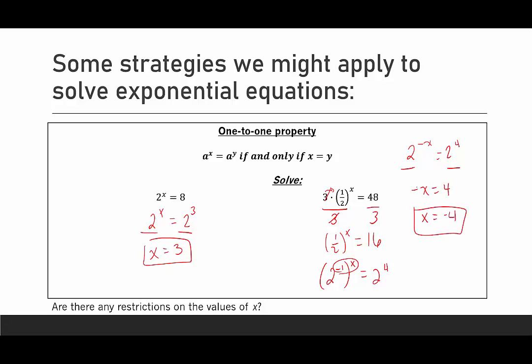And if you're ever unsure, you can always plug in your answer to make sure you end up with a true equation. And then at the bottom it says, are there any restrictions on the values for x? So is there anything that x can't be? We've seen an example where x is positive. We've seen an example where x is negative. It's possible to have zero as an exponent, so are there any restrictions? No, there are no restrictions.